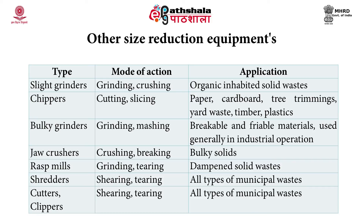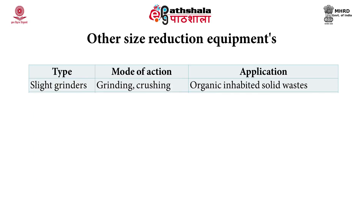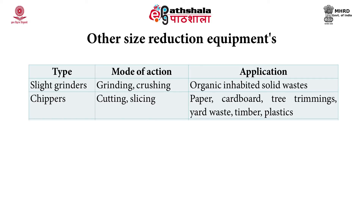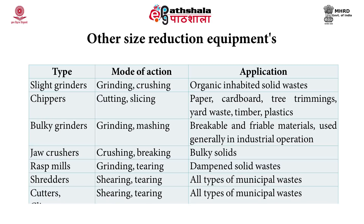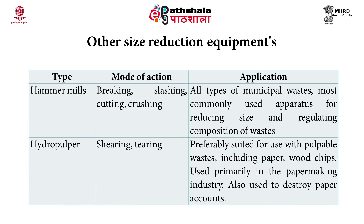Other size reduction equipments are summarized in a table, including slide grinders, chippers, bulky grinders, jaw crushers, rasp mills, shredders, cutters, clippers, hammer mills, and hydro pulpers — each with their own mode of action and application. Slide grinders use grinding and crushing for organic solid waste. Chippers use cutting and slicing for paper, cardboard, tree trimmings, yard waste, timber, and plastic. Bulky grinders use grinding and mashing for breakable and friable materials. Shredders, cutters, and clippers use shearing and tearing for all types of municipal waste. Jaw crushers use crushing and breaking for bulky solids.